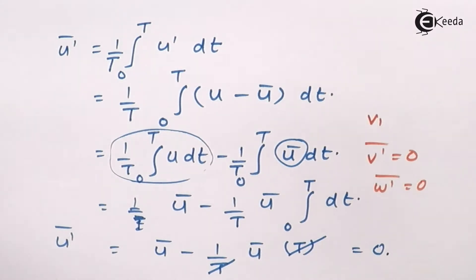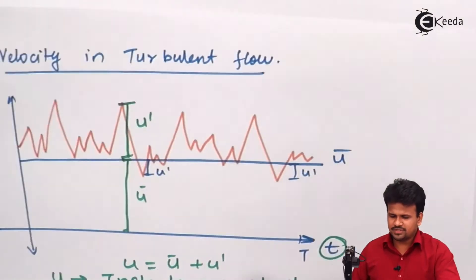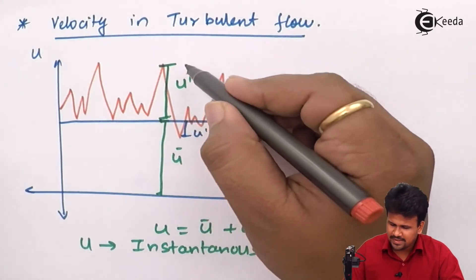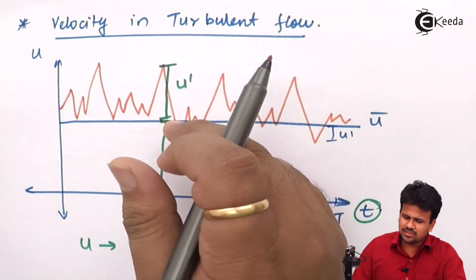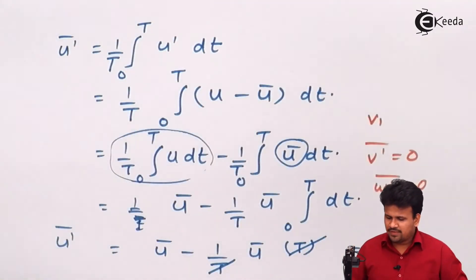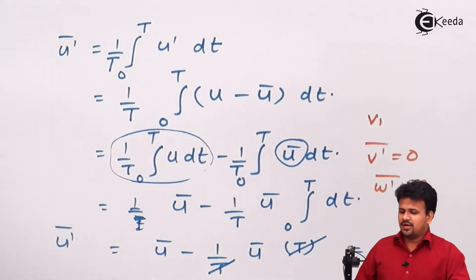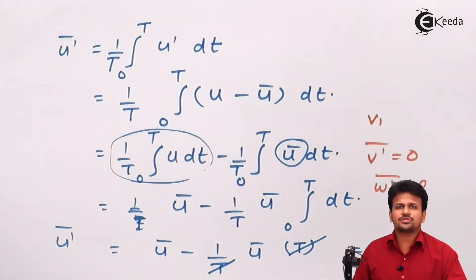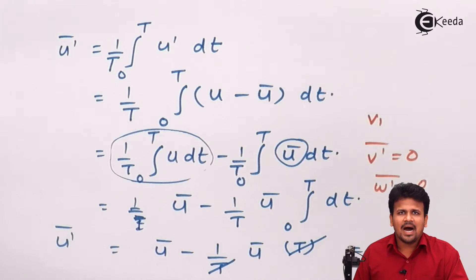These fluctuating velocities are zero because the magnitude by which u-dash increases is the same as the magnitude by which u-dash decreases, so they nullify each other and the mean comes out to be zero. Since the mean of the fluctuating part equals zero, we need to calculate something called the RMS velocity.